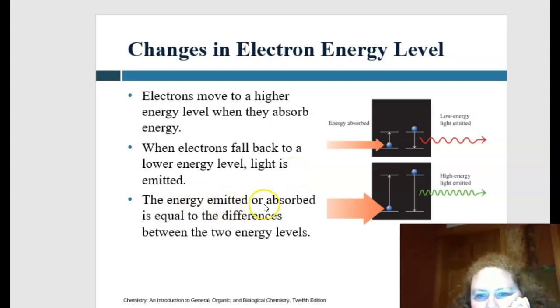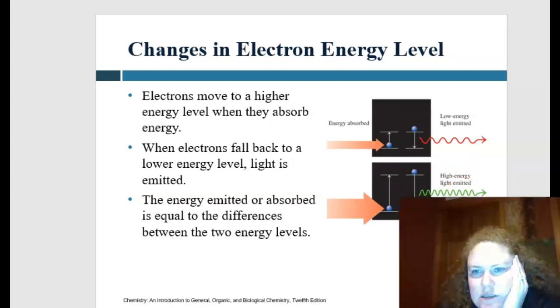The energy emitted is either going to be absorbed, and when it is absorbed, it's equal to the differences between the two energy levels. You can see here is the energy absorbed, and then the difference there is going to be the low energy light that's emitted versus this one moves more, and so it's going to be higher energy light that's emitted or given off.